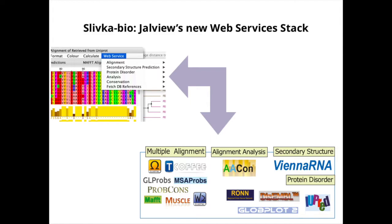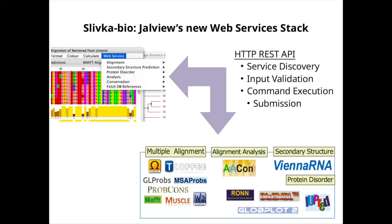Slivka Bio is Jalview's new web services stack. Jalview users can access a range of third-party bioinformatics tools via the UI, and we've been developing a series of web service frameworks over the years to make this happen. The basic idea with Slivka Bio is that there's an HTTP REST API that allows Jalview to discover the available services, validate input, submit jobs for execution, and monitor and retrieve the results.